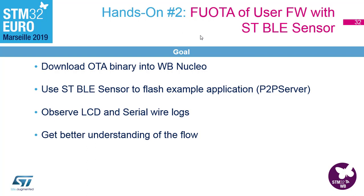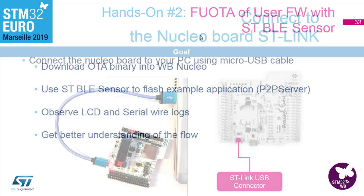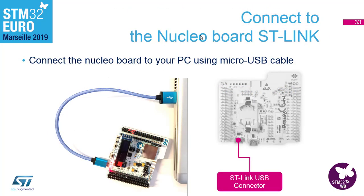To see what's happening, you can observe the logs on the LCD, or you can open the serial wire window to see in more detail what is happening — it follows the flow of each individual application. Let's start by connecting the Nucleo to the ST-Link connector; the dongle we will not need anymore.